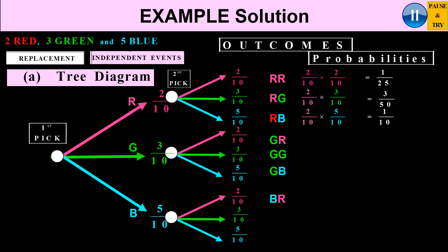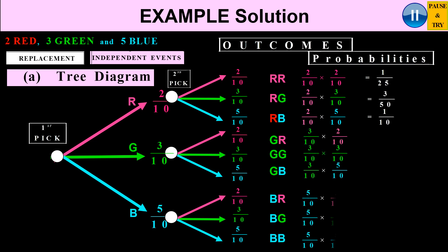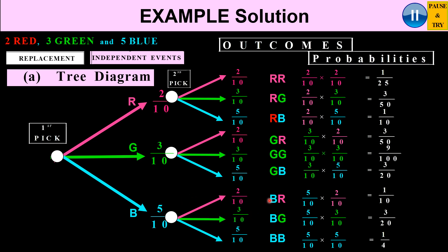I can do the same for the remaining outcomes: green followed by red, green followed by green, and green followed by blue. So I can get all my outcomes and calculate the probabilities for green-red, green-green, and green-blue. In exactly the same way I can calculate the blue branch probabilities: 5 over 10 times 2 over 10, 5 over 10 times 3 over 10, and 5 over 10 times 5 over 10.